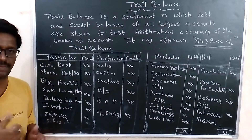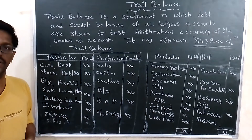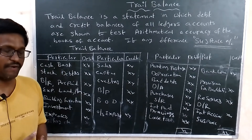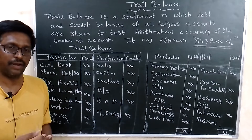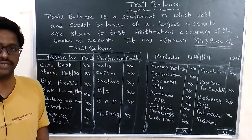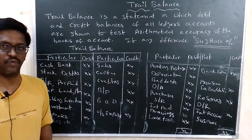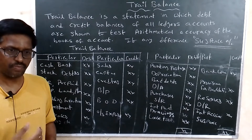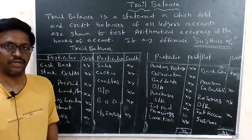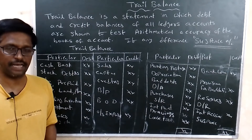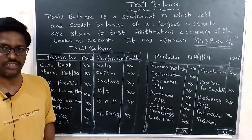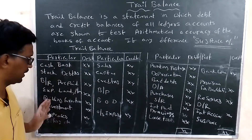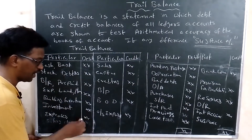Expenses include printing and stationery, postage and telegram, advertisement, rent, rates, taxes, insurance, carriage inward, carriage outward, traveling expenses, publicity, xerox expenses, telephone expenses, internet expenses, and bank charges. All expenses are shown in the debit side of the trial balance.